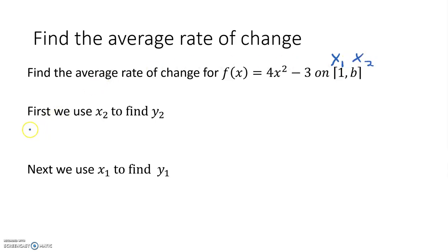We're going to first use x₂ to find y₂. We substitute in b for x and this gives us 4b² minus 3. Next, we use x₁, which is 1, to find y₁. So 4 times 1² minus 3, which is 4 minus 3 or 1.